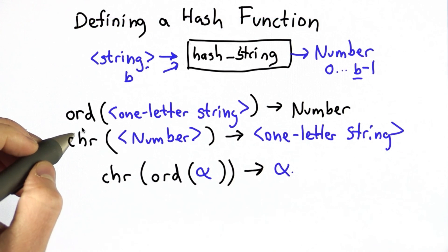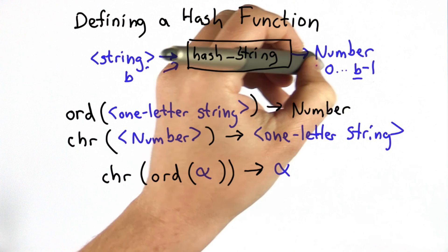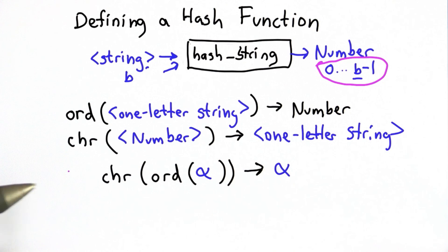So with ord, we have a way of converting strings to numbers, converting single-character strings to numbers. The other property we need our hash function to have is that the output number is always between 0 and b-1. We need it to be in that range because we're going to use that to index the list to find the bucket where that string belongs.